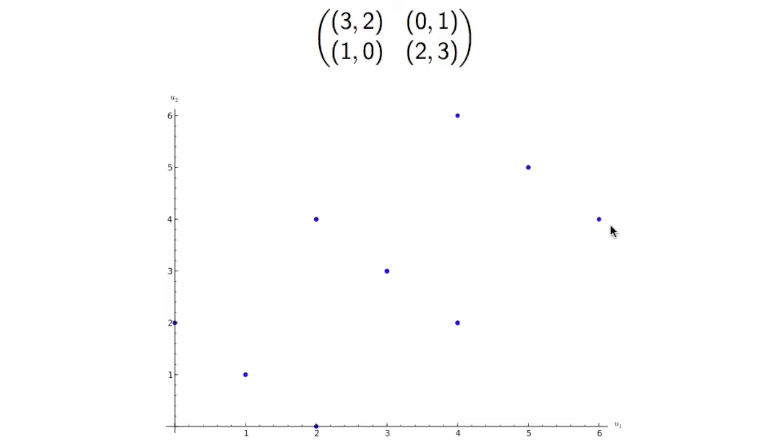So for example you see 6-4 there, that would happen if this outcome happened twice. So twice in a row both players, the row player played this twice in a row and the column player played this twice in a row.